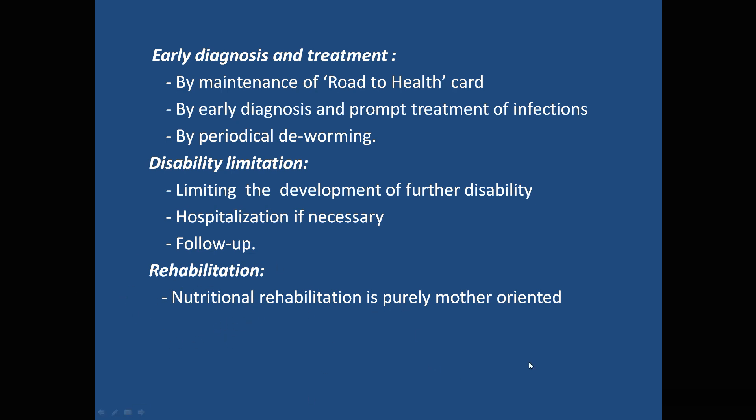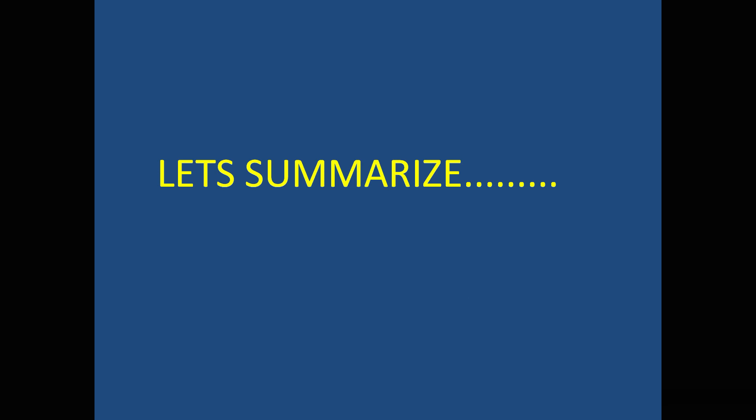Rehabilitation is an example of tertiary prevention. Severely malnourished cases require rehabilitation involving nutritional support, which can be home-based or facility-based. In home-based rehabilitation, mothers are trained on how to carry out care and are taught how best to improve and maintain their child's nutrition.